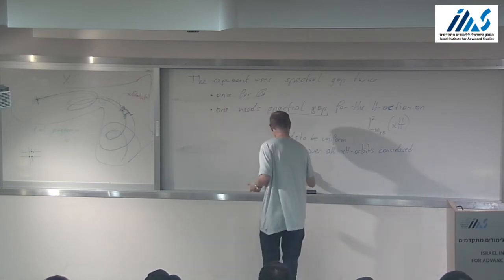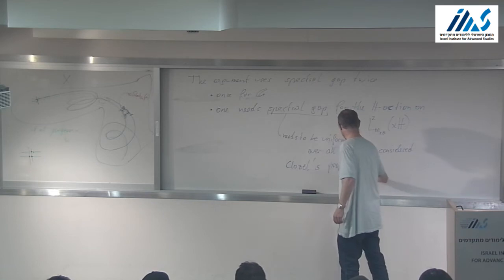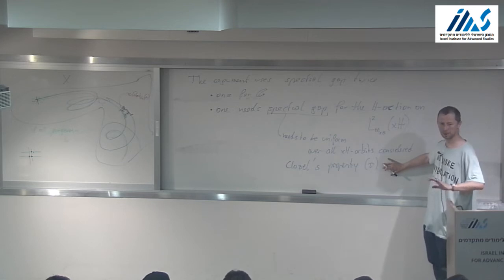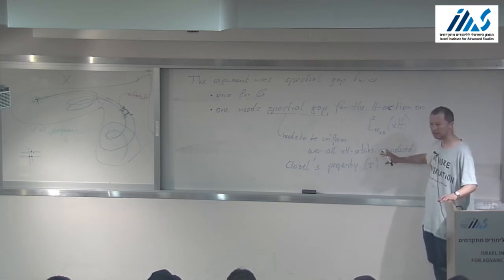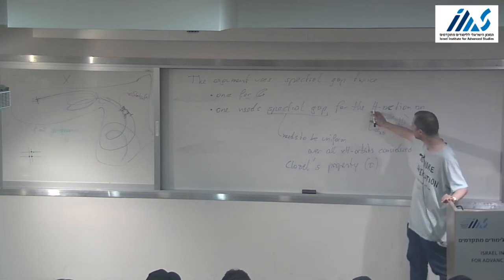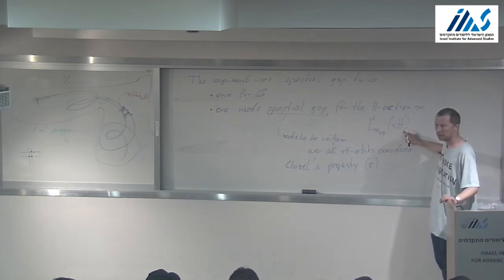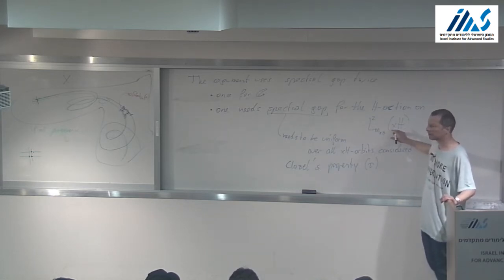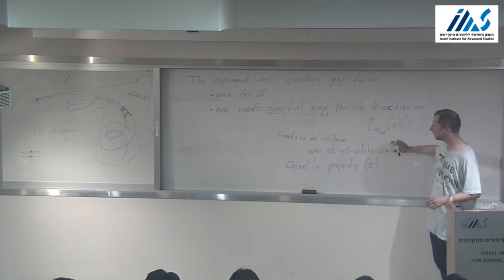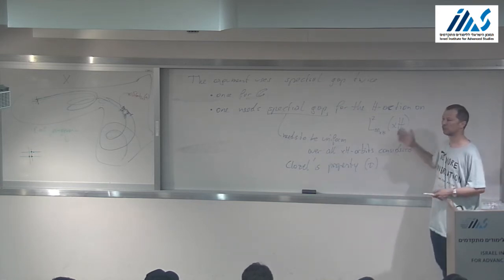In general, we need property tau. This is precisely saying: if you have congruence quotients of your group H, these congruence quotients have uniform spectral gap. We need it in this form because even though H is fixed, the H orbit is isomorphic to H mod stabilizer. But the Q-structure of that stabilizer could vary, and because of that, this uniformity needs to be the strongest known. But it is known in particular, so it can be used.